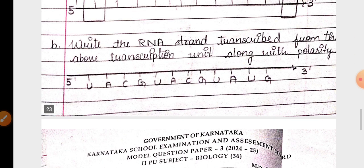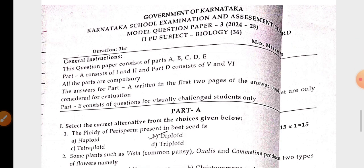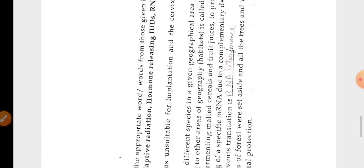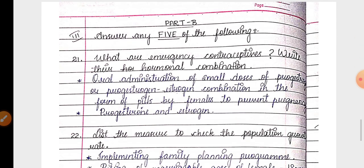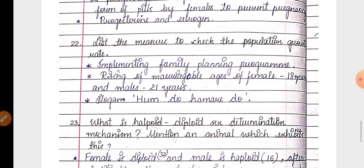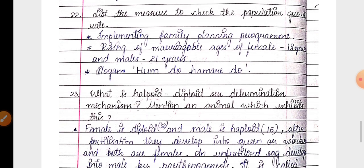Then last, third model paper, MCQs write option has been marked. Fill in the blanks also has been solved. Then two marks question about emergency contraceptives. Next question, measures to check the population growth.